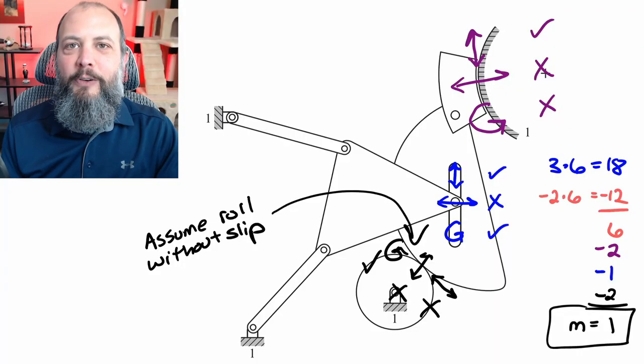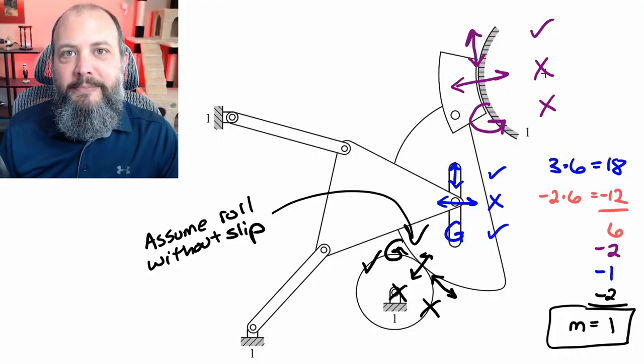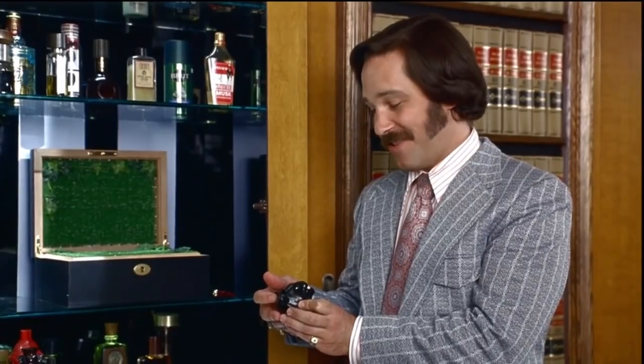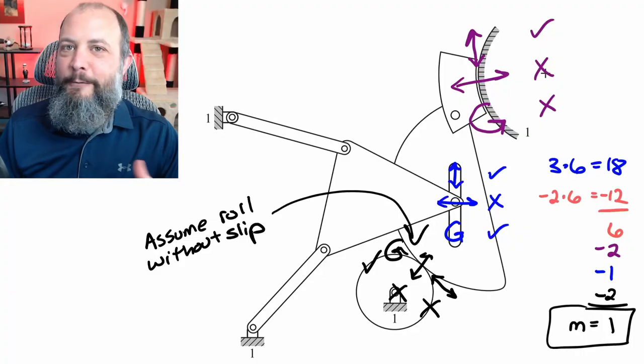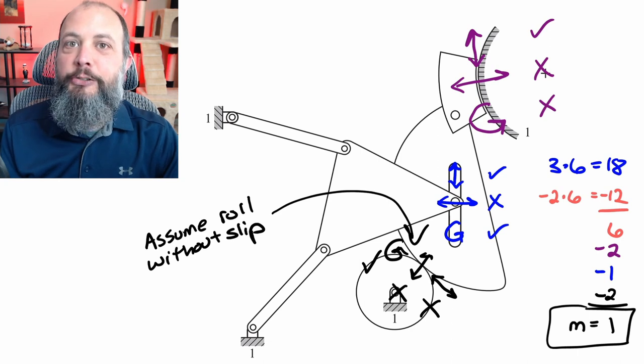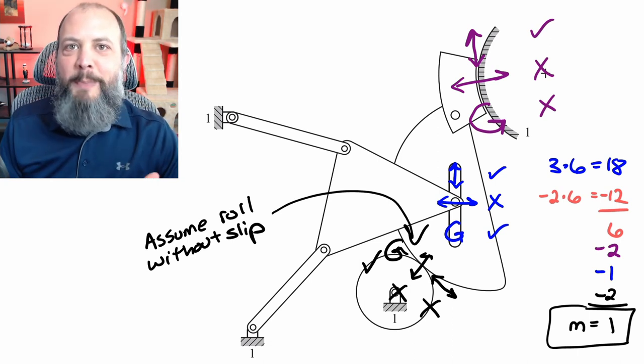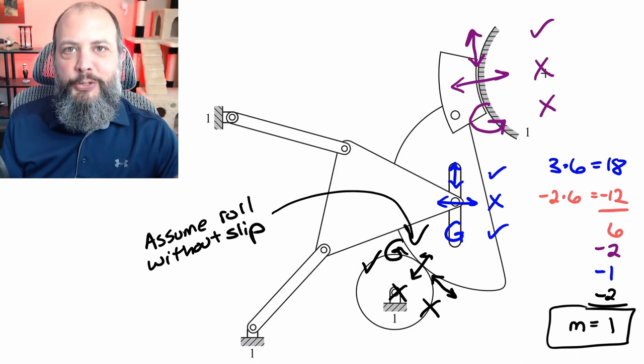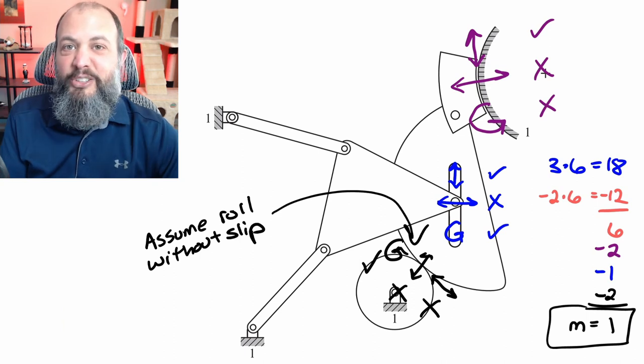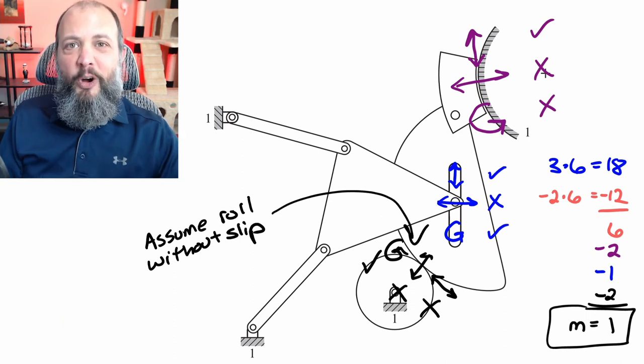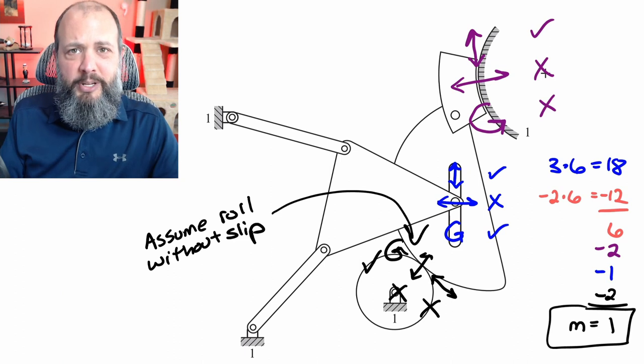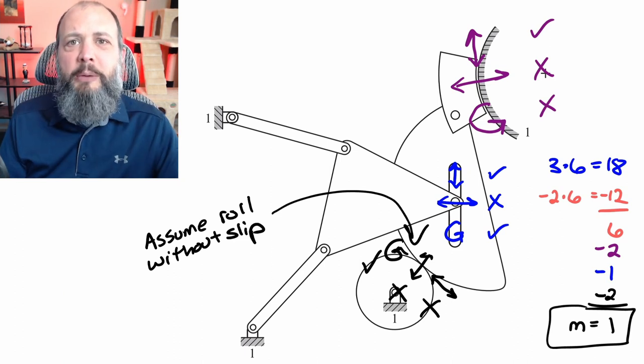And here it is: the best way to check that you got the right answer at the end of these problems is to look at your numerical value. And if you got a value of M equals one, it's probably right. 60% of the time, it works every time. If you got an M value that is not one, you should double check your answer. We almost always make mechanisms so that they can be controlled by a single input. So the only time you're going to get an M value that's not one is when your professor is just giving you a tricky problem just to see if you can actually use the equation properly.